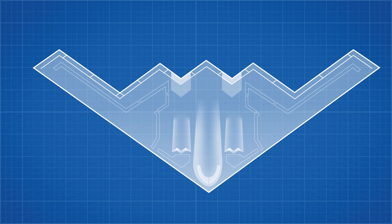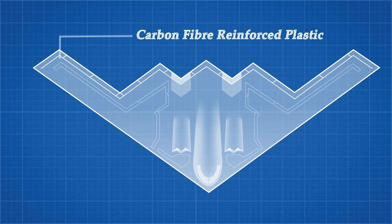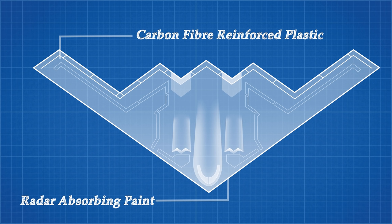Beyond its shape, the B-2 is also made with advanced composite materials capable of absorbing and dissipating incoming radio energy. The exact composition of the B-2 is classified, but we know that the skin is made from a carbon fibre reinforced plastic, while the leading edge is lightly painted with a material which contains small particles of iron, which absorb electromagnetic energy and convert it to heat.